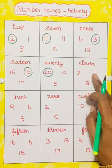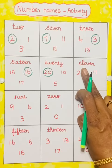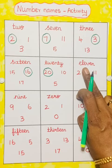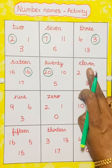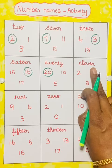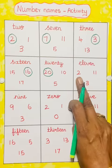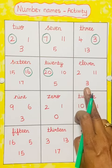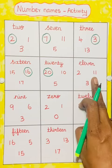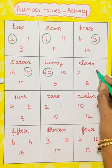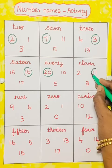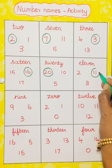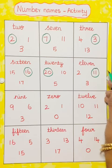Next one is 11. E-L-E-V-E-N. 11. This is 2, this is 3, this is 11. So we have to circle the number 11.